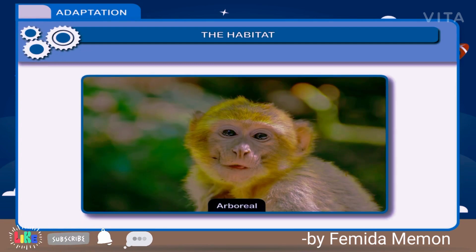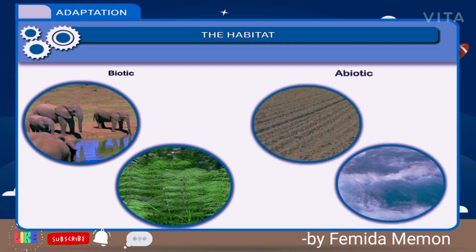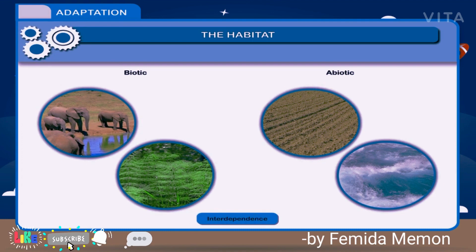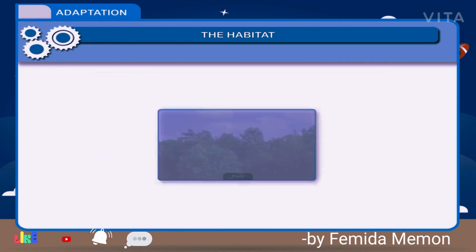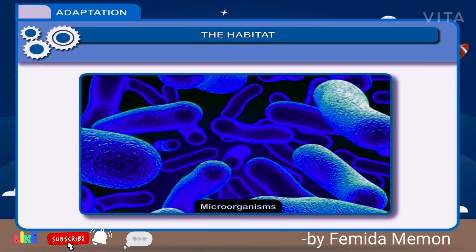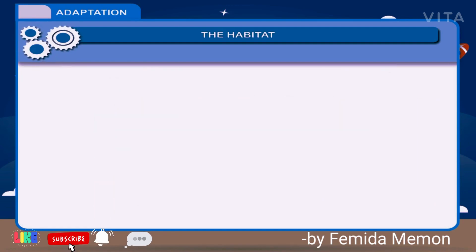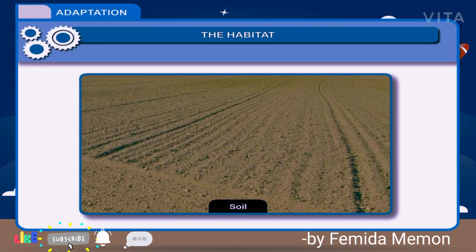In any habitat, all living forms interact with each other and with their surroundings. This interaction of biotic and abiotic components is also called interdependence. The existence of plants, animals, and microorganisms, along with temperature, moisture, air, water and soil, interact in different ways.